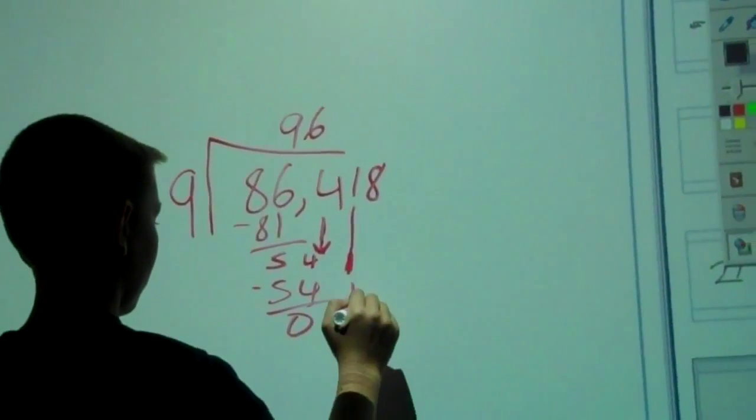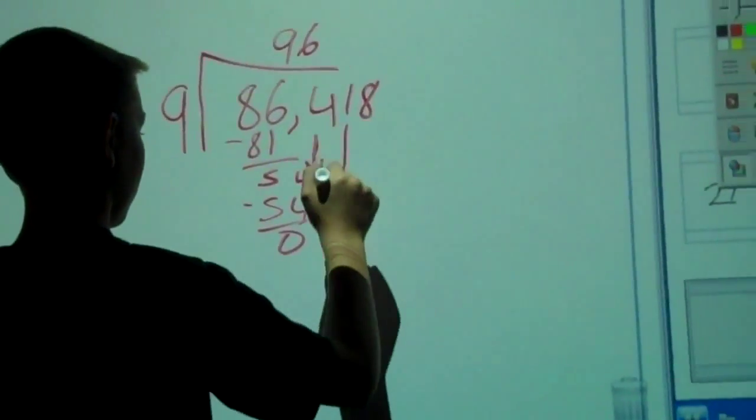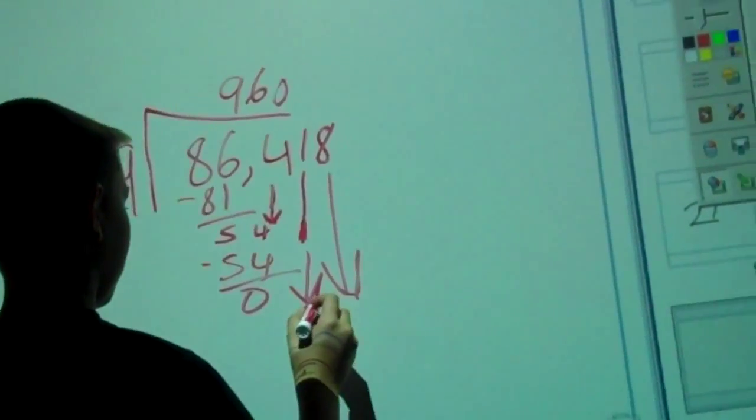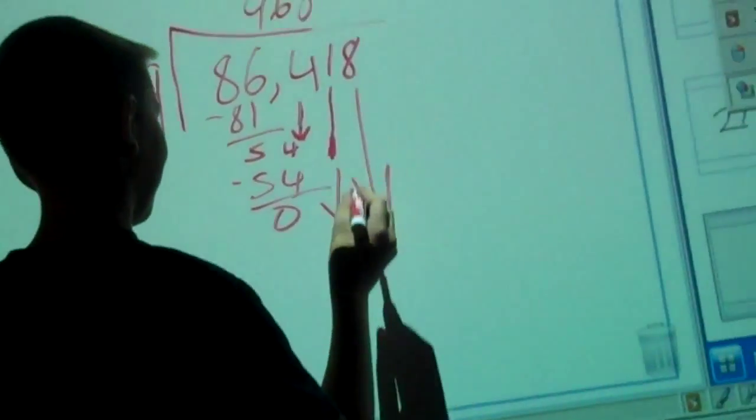And then you bring down your 1, 9 goes into that 0 times, and there's our 0 in the quotient, and then it would be 9.